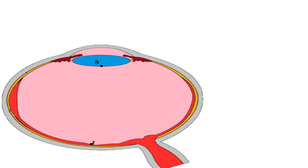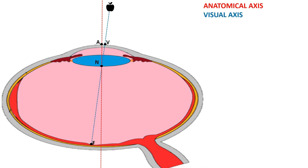All explanation will be done with this eye diagram. F represents the fovea of the eye, and N represents the nodal point of the eye, which is somewhere close to the center of the posterior lens capsule. The anatomical axis is a line that passes through the central most point of the cornea, perpendicular to the eye, and meets the retina at a point nasal to the fovea. The central most point of the cornea through which the anatomical axis passes is marked as A.